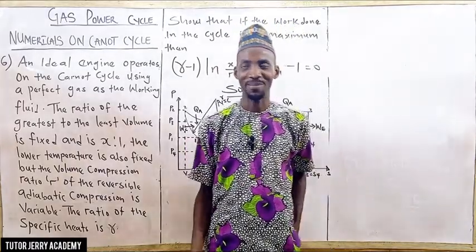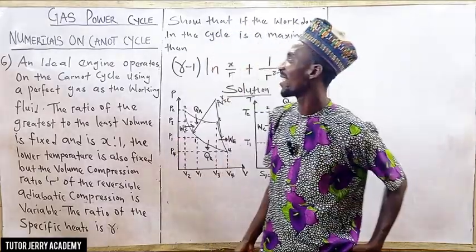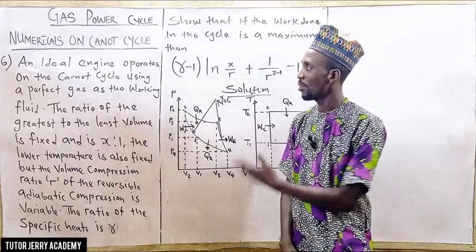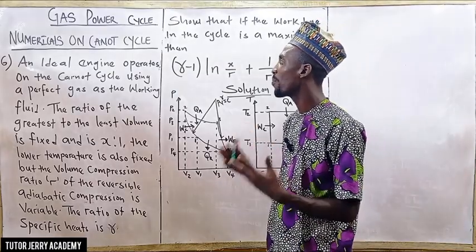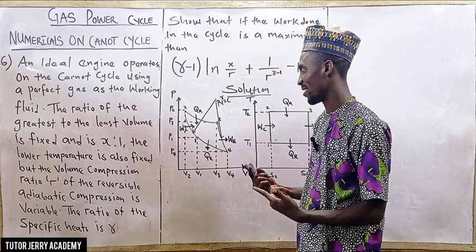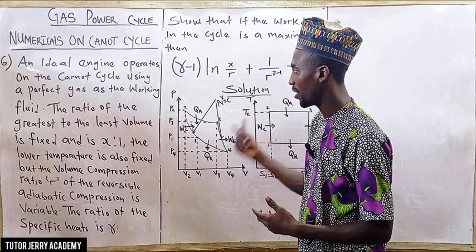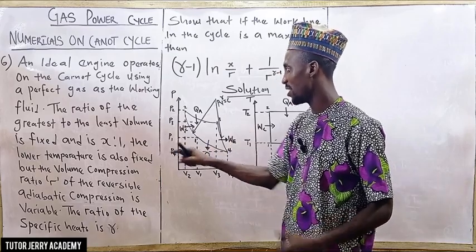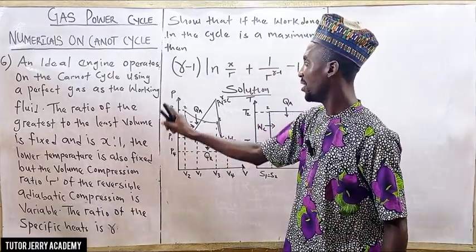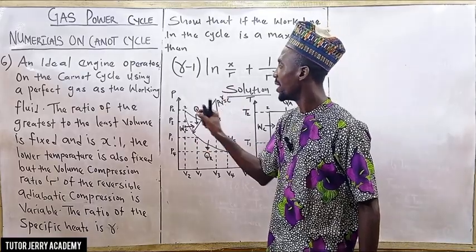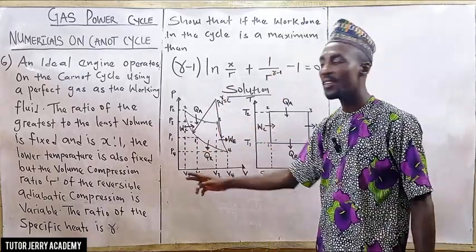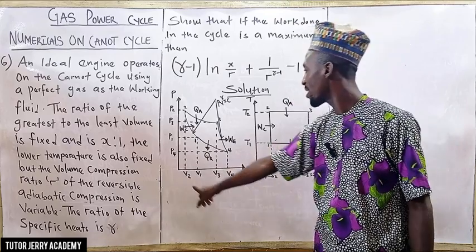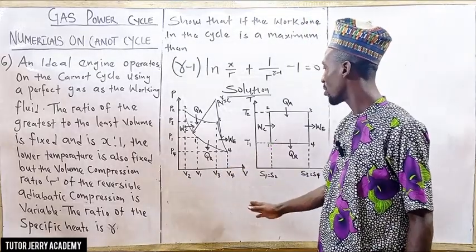Hello and welcome. Today we'll be looking at numerical six on the Knot cycle, which is a heat engine that operates on the Knot cycle using a perfect gas as the working fluid. The ratio of the greatest to the least volume is given as s ratio one. Looking at the PV diagram, the greatest volume is V4 while the least volume is V2.